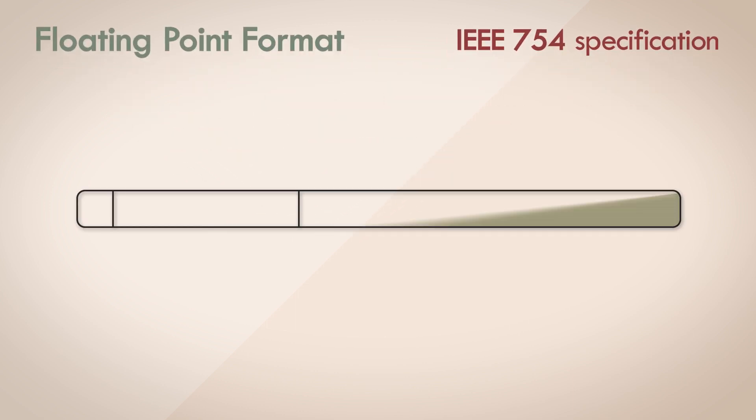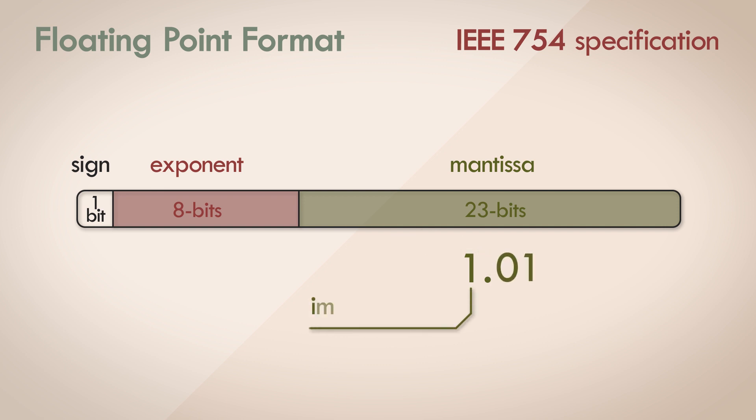So we have this sign, the mantissa, and the exponent. And the mantissa is always represented as one point, the actual value that's stored in the mantissa field. The one before the binary point is implied, and we never store that, so that the number is always normalized.